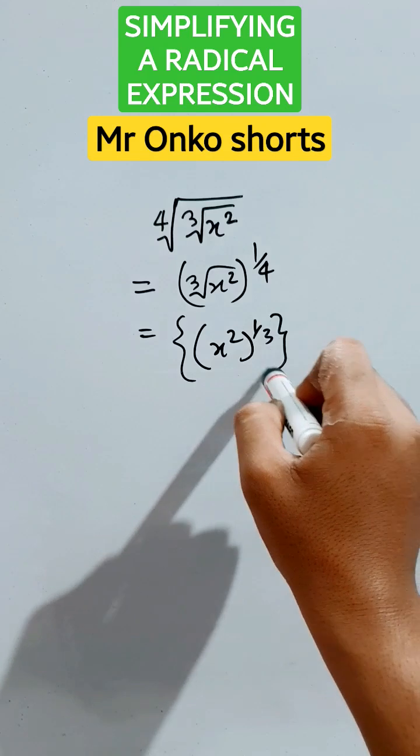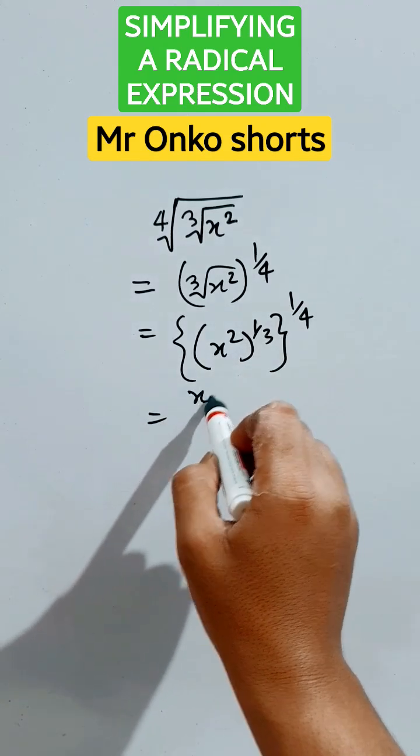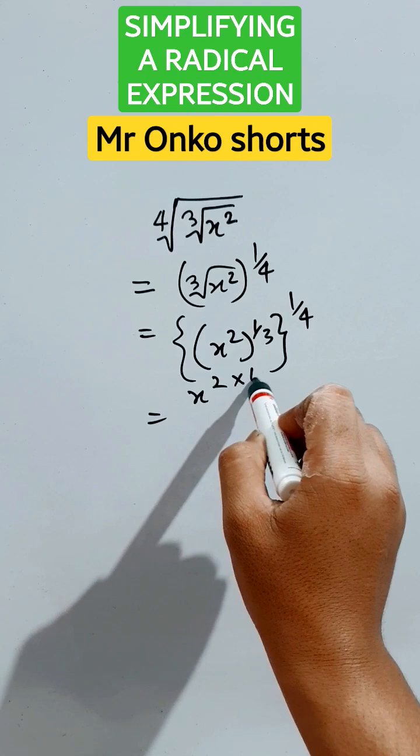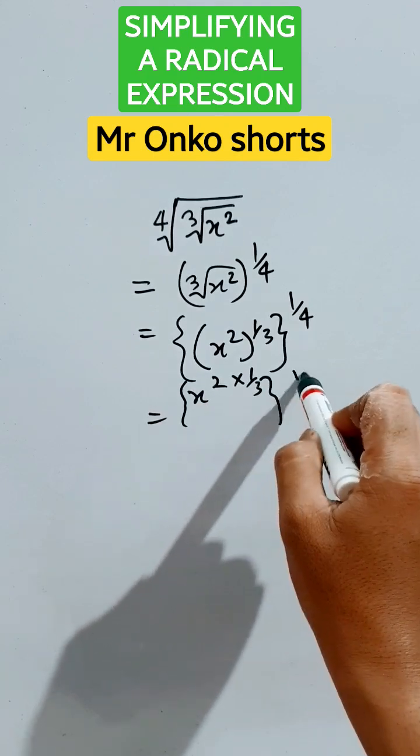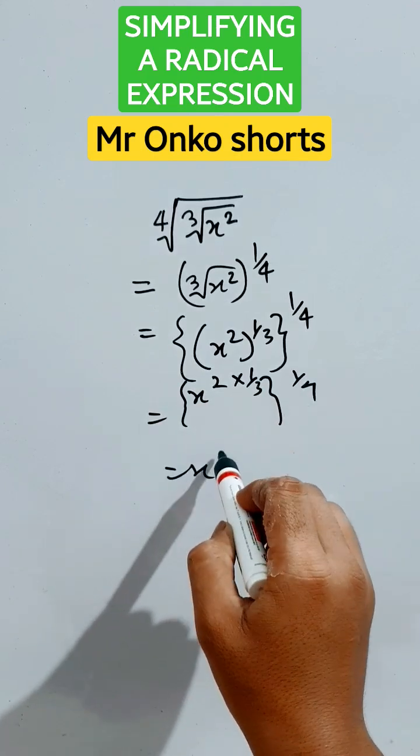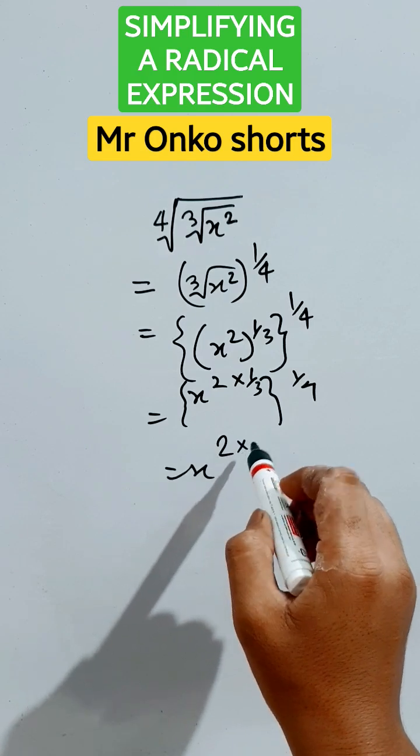Now it's actually x to the power 2 into 1 by 3 whole to the power 1 by 4. Finally, it is x to the power 2 into 1 by 3 into 1 by 4 according to the law of indices.